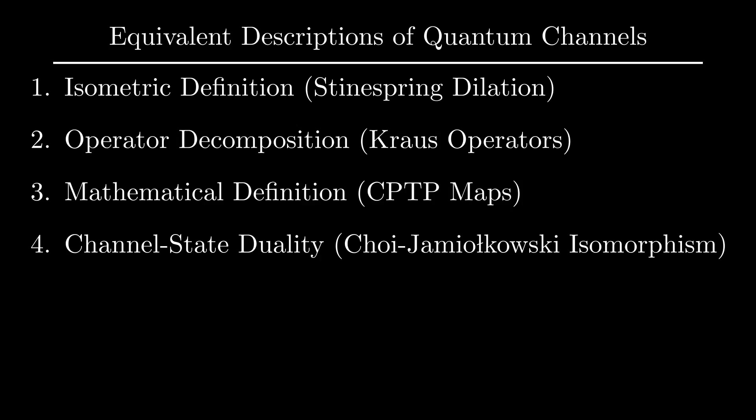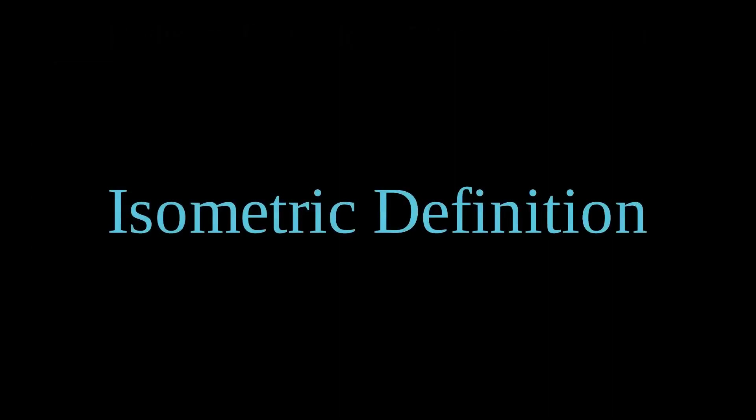These include the isometric definition via the Steinspring dilation, the Krauss operator decomposition, the CPTP map, and the Choi isomorphism. Let's start with the Steinspring dilation.